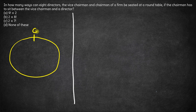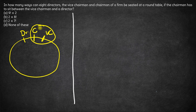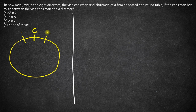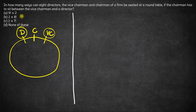If the chairman has to be between the vice chairman and a director, we can think of it this way: wherever the chairman sits, there are going to be two people next to him. It's a circle, so there will definitely be two people next to the chairman. One of them has to be the vice chairman and the other has to be a director.